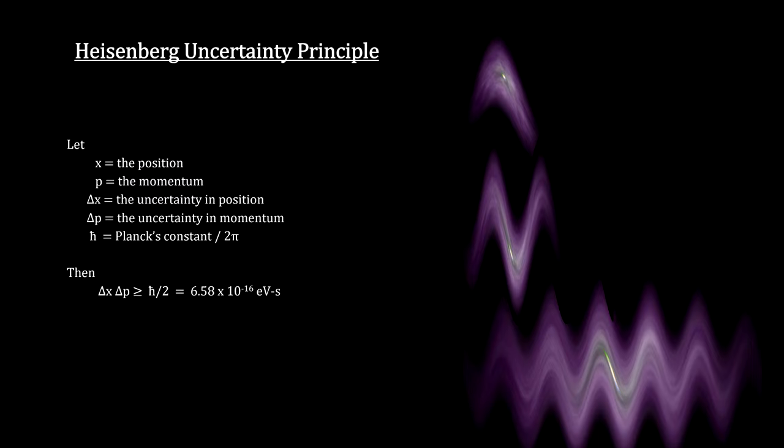Mathematically stated, the uncertainty in position times the uncertainty in momentum is always greater than or equal to Planck's constant divided by 4 pi. This is the Heisenberg uncertainty principle.